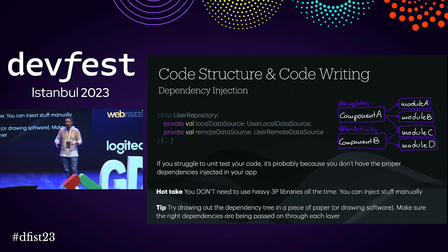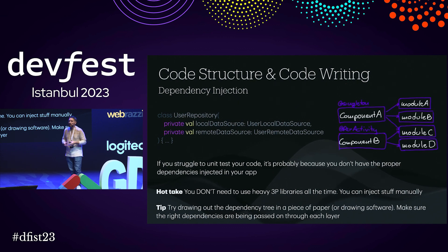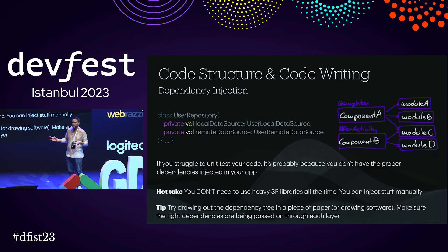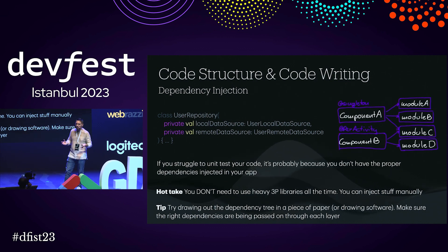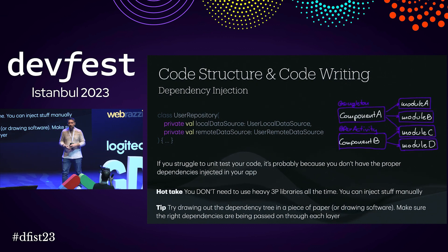A little tip that has actually helped our team quite a lot: when dealing with a feature, module, or app that uses dependency injection, try to draw out your dependencies on a piece of paper or any design software. It can help you visualize what's happening in your application and what is being passed where, in order to speed up your development process.